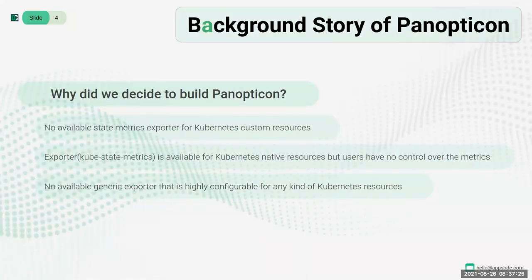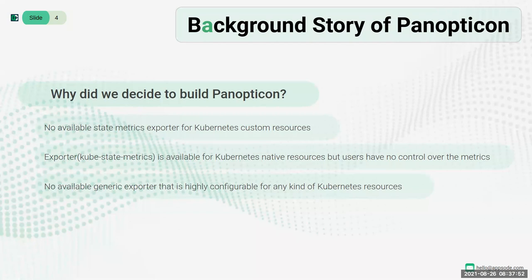Why did we decide to build a generic state metrics exporter? We wanted to collect state metrics from our various projects - KubeDB, Stash, KubeVault, and others. But we couldn't find any existing tool that would accomplish our needs, because our products have custom resources and we want to collect those custom resource states as metrics to show them in Prometheus or Grafana. Kubernetes has a project called kube-state-metrics, but it does not currently support collecting metrics from any Kubernetes custom resource. Moreover, the metrics for Kubernetes native resources in kube-state-metrics are predefined with hardly any customization options. So finally, we decided to build our own generic resource metrics exporter.